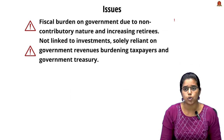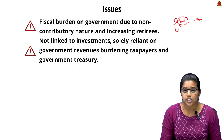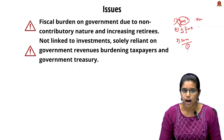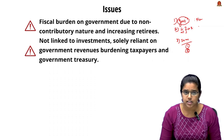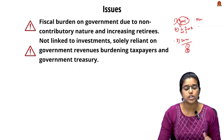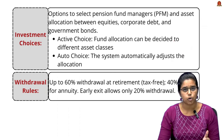Issues with the Old Pension Scheme: Since the pension is entirely funded by the government, this creates a significant financial burden. With increasing life expectancy and a growing workforce, this burden further escalates. The main funding sources — taxpayer money and the government treasury — are under strain, making the OPS fiscally unsustainable.